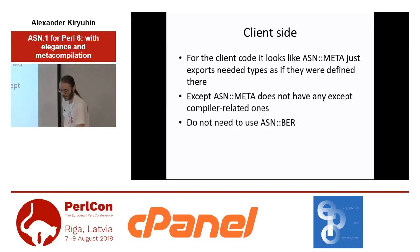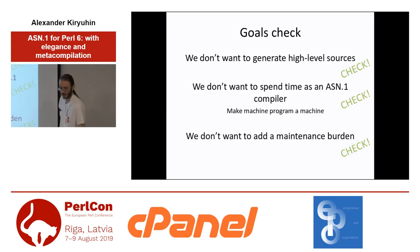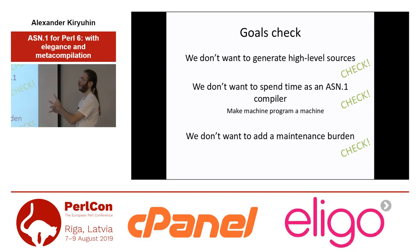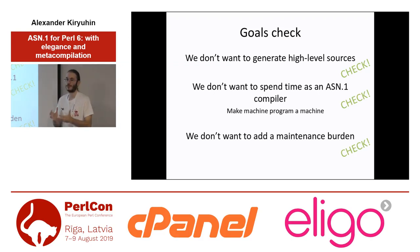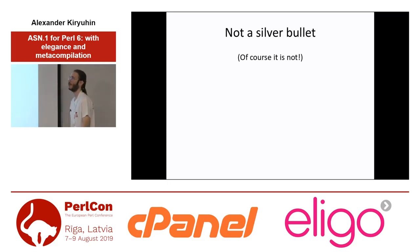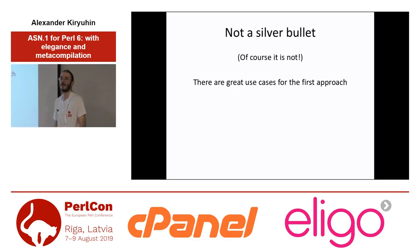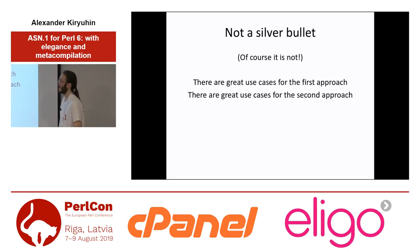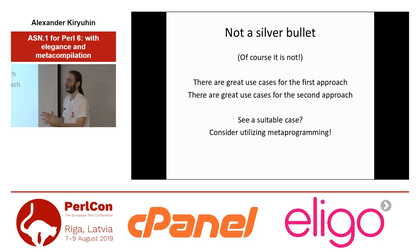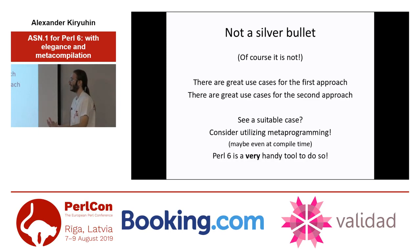So you don't need to compile them, you don't store source code. And for the client, it looks just like ASNMeta simply has the necessary types — but it doesn't; it has only compile-time ones. You don't need to use the ASN.1 bare model a lot, I hope. We don't generate high-level sources — the machine does it for us. And for the user it is very easy. Of course it is not a silver bullet, but if you see a case where this approach applies, consider it — and Perl 6 is a very handy tool to do so, because I can't think of any other language where you can do it so smoothly.